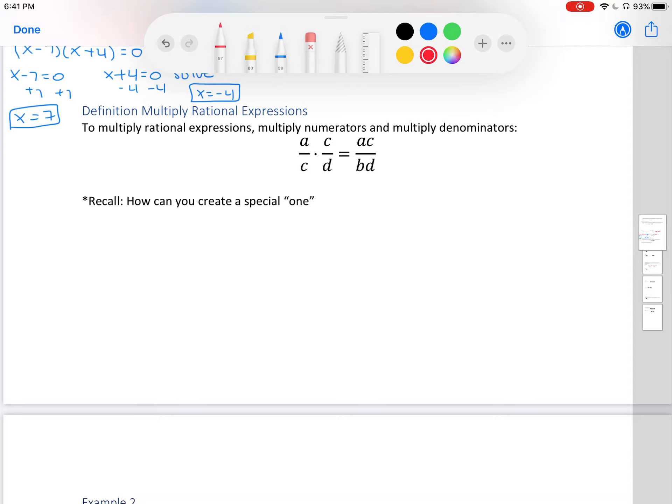Definition, multiply rational expressions. To multiply rational expressions, multiply numerators and multiply denominators. So that means we have to multiply a times c and b times d. So we multiply fractions, we multiply across.